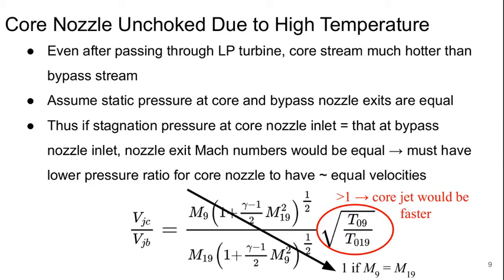If we assume that the static pressure at the core and bypass nozzle exits are equal, then if the stagnation pressure at the core nozzle exit is roughly equal to that at the bypass nozzle exit, the nozzle exit Mach number should be equal. We'd have to have a lower pressure ratio for the core nozzle in order for them to have equal velocities.